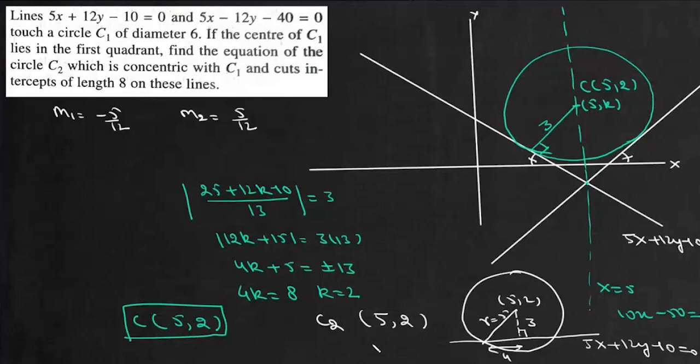So we have to find this circle C2 with center at 5 comma 2 and radius equals 5. So equation of this circle will be x minus 5 square plus y minus 2 square, and that will be equal to 25. Or we can write x square plus y square minus 10x minus 4y plus 4 equals 0. And that is the answer to this question.